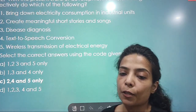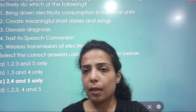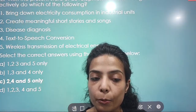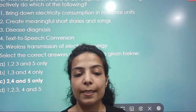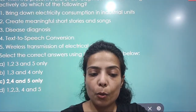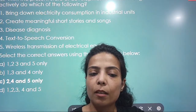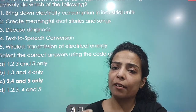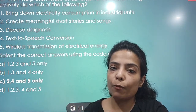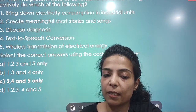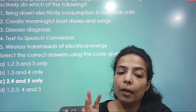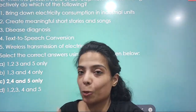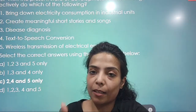With the present state of development, Artificial Intelligence can effectively do which of the following? The options were: bring down the electricity consumption in industrial units, create meaningful short stories and songs, disease diagnosis, text-to-speech conversion, and wireless transmission of electrical energy. Electricity consumption reduction is also about artificial intelligence use, and statement 3 is also correct. So C is the right answer, that is 2, 4 and 5.